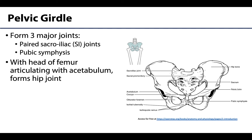There are three major joints or articulations of the true pelvic girdle. You are going to have the paired sacroiliac joints, which I am circling right here. You'll often hear these abbreviated as the SI joints.